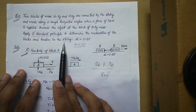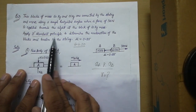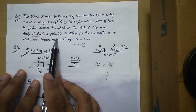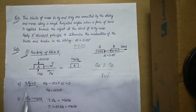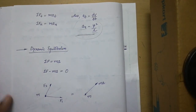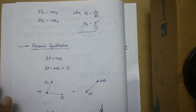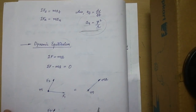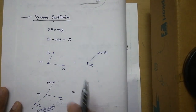In this particular problem, we are dealing with D'Alembert's principle, which we have already covered in unit number 6 when I made the theory video. The concept name is dynamic equilibrium.